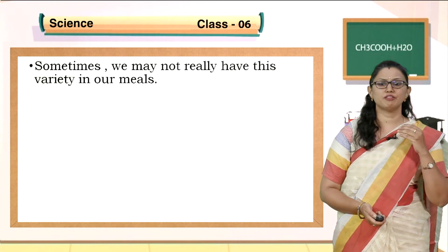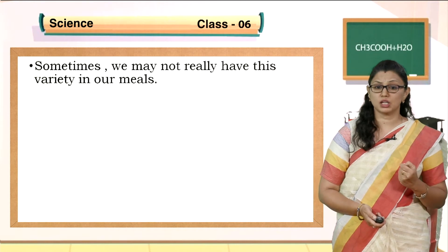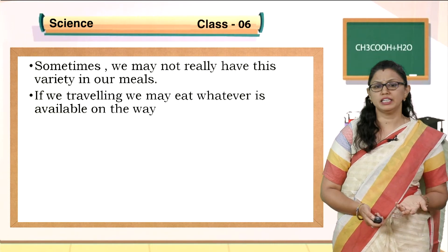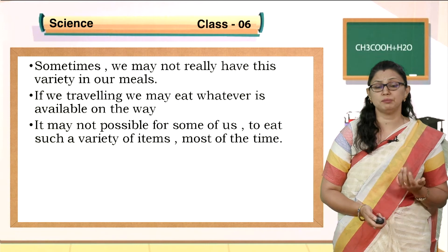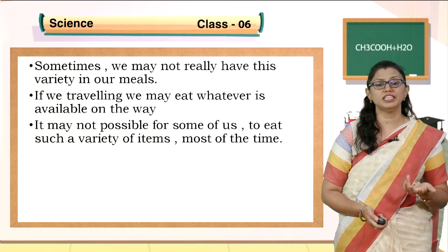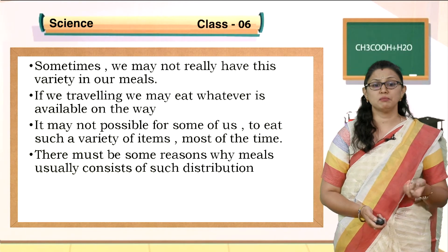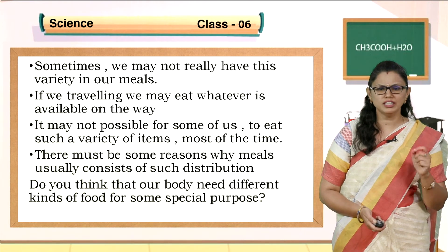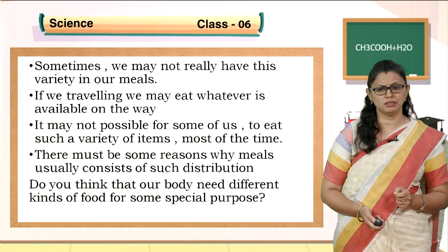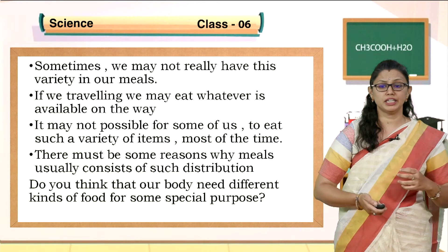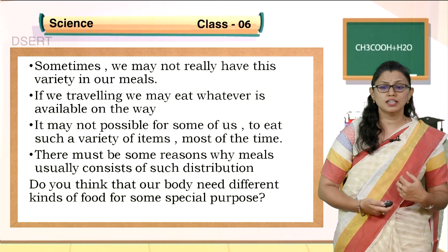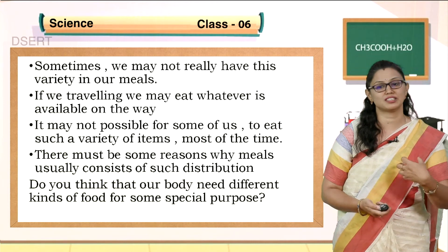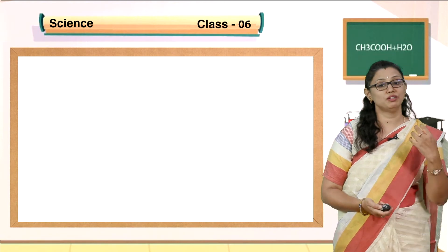You have understood that different food items are used in different states and regions. Now, why do we have varieties of food in our meals - in our breakfast, in our dinner? If we are travelling, we may eat whatever is available. There must be some reason why meals usually consist of such variety. Do you think our body needs different types of food for some special purpose? Yes, children - whatever we eat, we should know what we are eating and what our body needs.